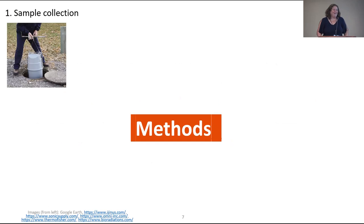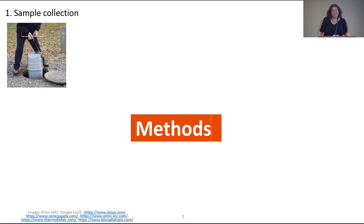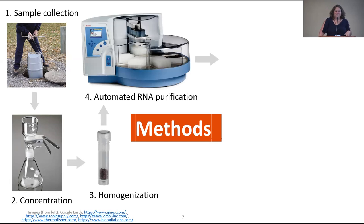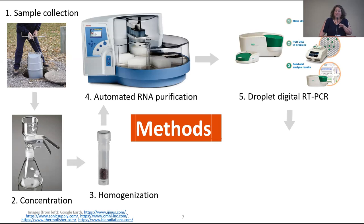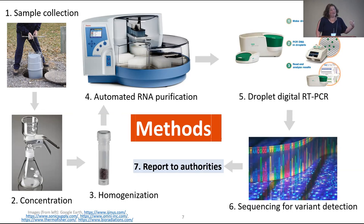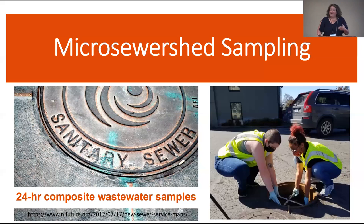Regarding methods: we do 24-hour composite sample collection. For our statewide program we sample the influent to wastewater treatment facilities, but for what we're discussing today we sample in manholes. We concentrate through filtration, then homogenize the sample. We do automated RNA purification and digital droplet RT-PCR to analyze for whatever pathogen we're targeting — specific to that pathogen. We also sequence for variants of that pathogen, then report to authorities. OHA has a dashboard where all our Oregon data is posted.